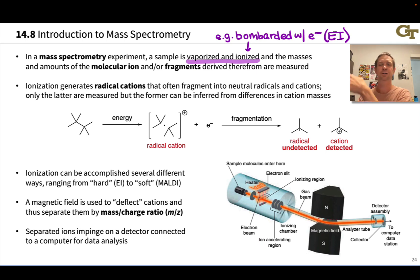Those cations are then steered toward a detector by a magnetic field to different extents depending on their masses, and so we can measure the masses of all the ions produced.